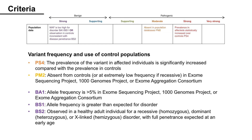Variant Frequency and Use of Control Populations: PS4 can be assigned when the prevalence of the variant in affected individuals is significantly increased compared with the prevalence in controls. PM2 can be assigned when the variant is absent from controls, or at extremely low frequency if recessive, in Exome Sequencing Project, 1000 Genomes Project, or Exome Aggregation Consortium. BA1 is for variants with allele frequency greater than 5% in those same databases. BS1 can be assigned when allele frequency is greater than expected for the disorder. BS2 is for variants observed in a healthy adult individual for a recessive, dominant, or X-linked disorder with full penetrance expected at an early age.